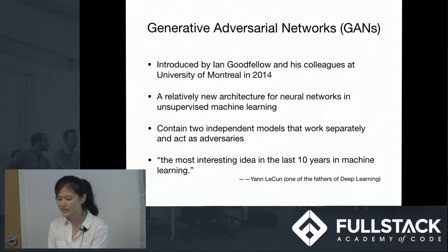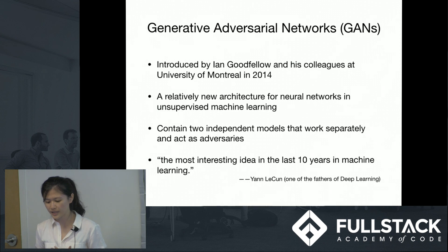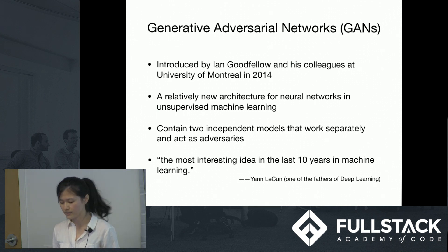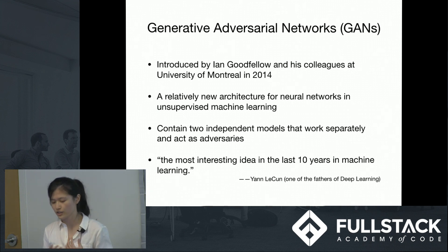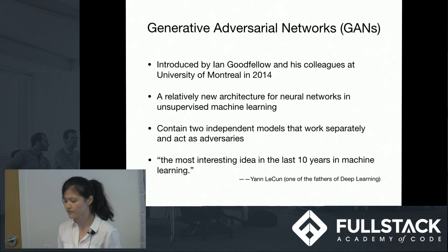In 2014, Ian Goodfellow published a stunning paper introducing the world to GANs, which are a new architecture for an unsupervised neural network and have the potential to create systems that learn more with less help from humans. The basic idea for GANs is that there are two models, and they fight against each other to achieve far better performance compared to traditional networks. GANs are the hottest topic and consist of the most interesting idea in the last 10 years in machine learning.